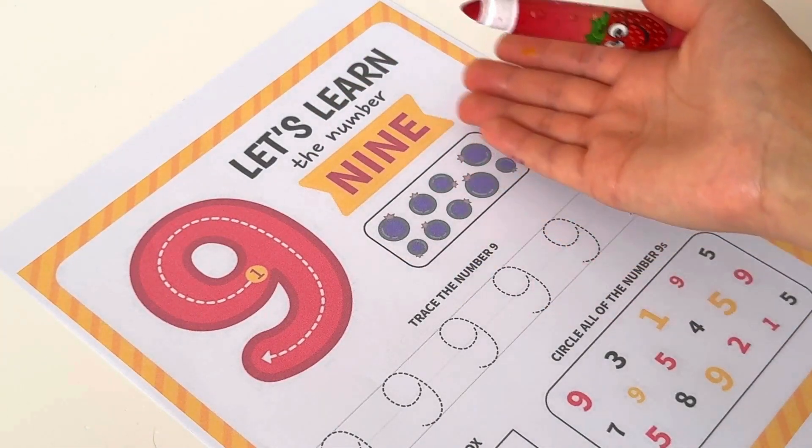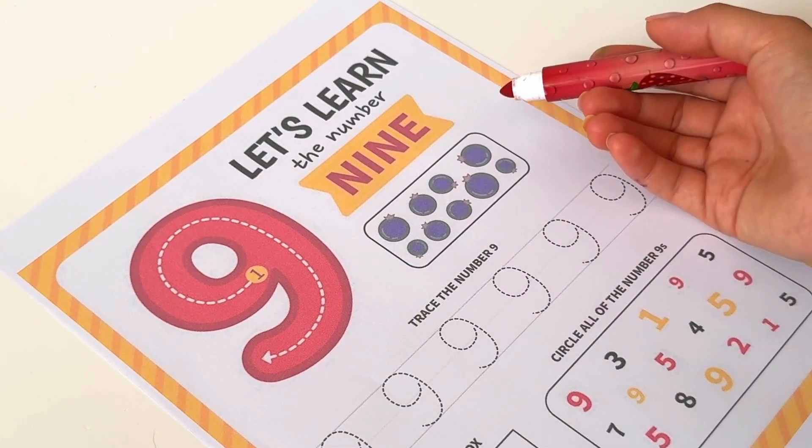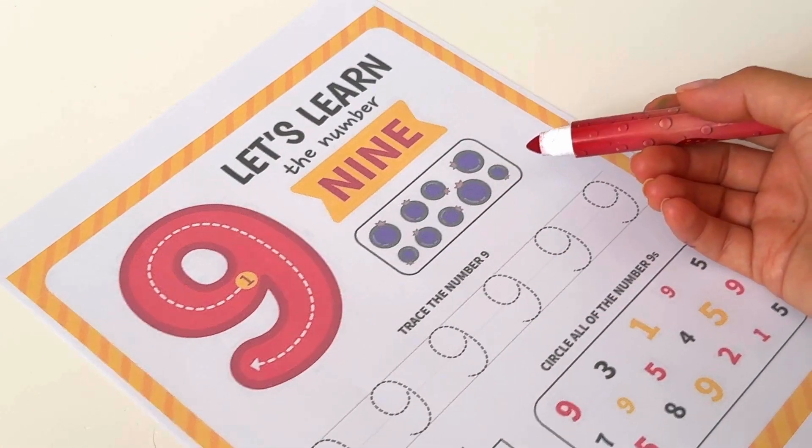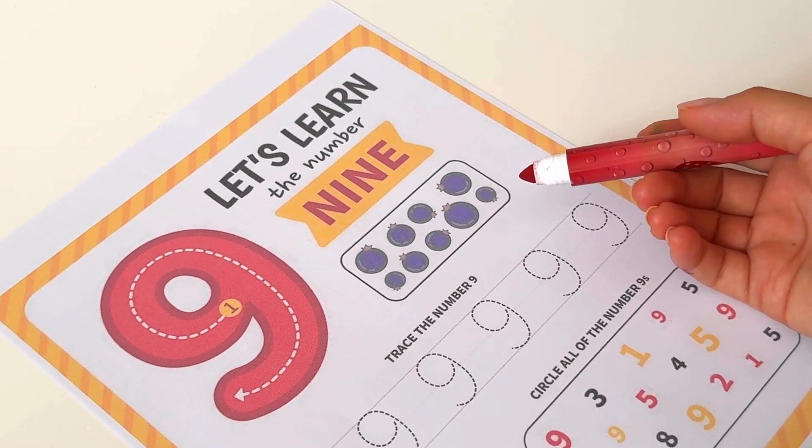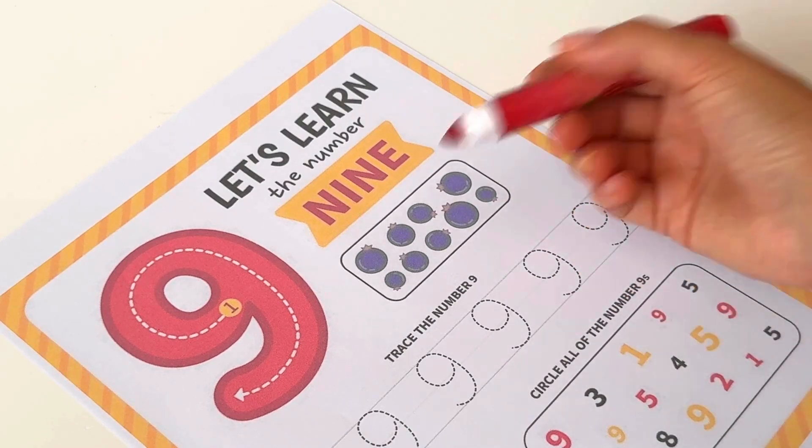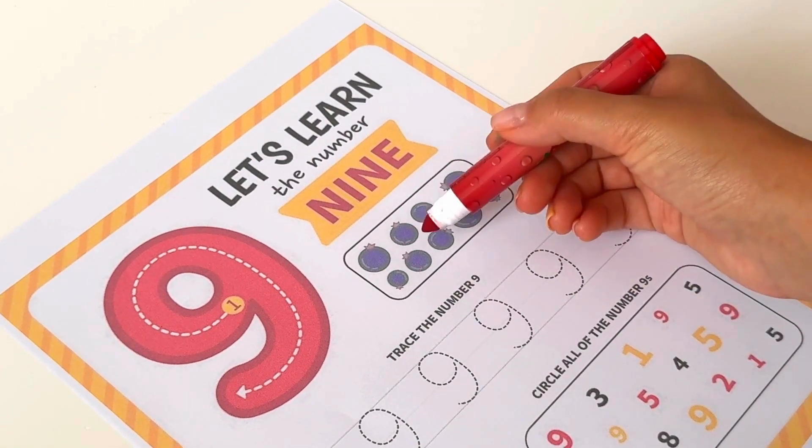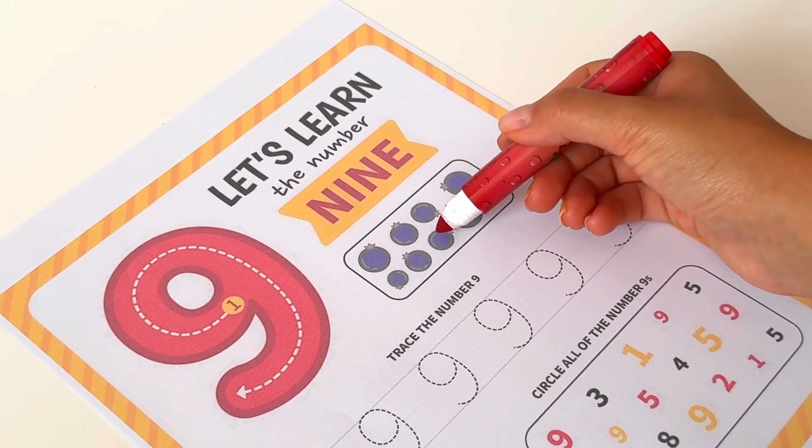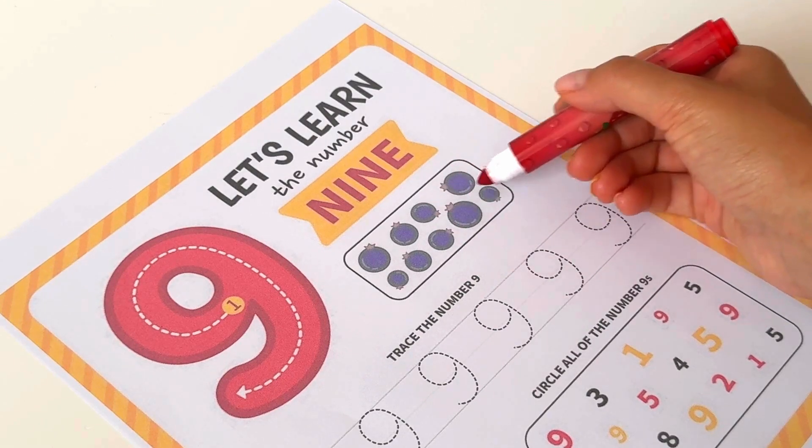Hello everyone, let's learn the number nine. You know what are these? These are blueberries. Let's count how many blueberries there are here in this box. One, two, three, four, five, six, seven, eight, nine. There are nine blueberries.